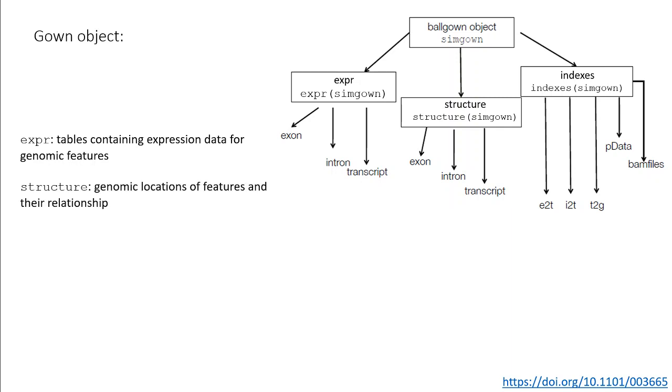The structure component contains all the genomic coordinates of these features and their relationship to one another. The indexes component contains lookup tables for finding correspondence between different types of structures. Furthermore, the pdata table contains experimental information connecting phenotype to genomic measurements.